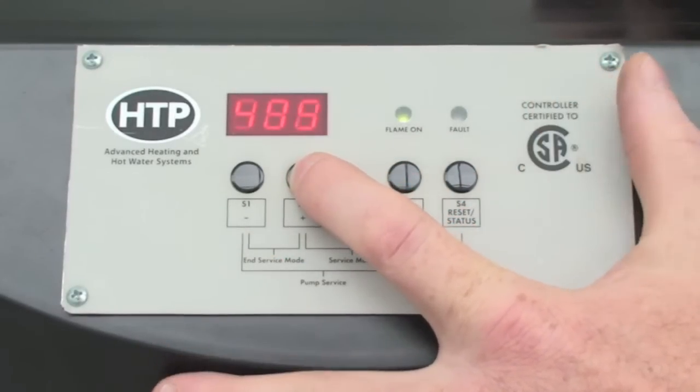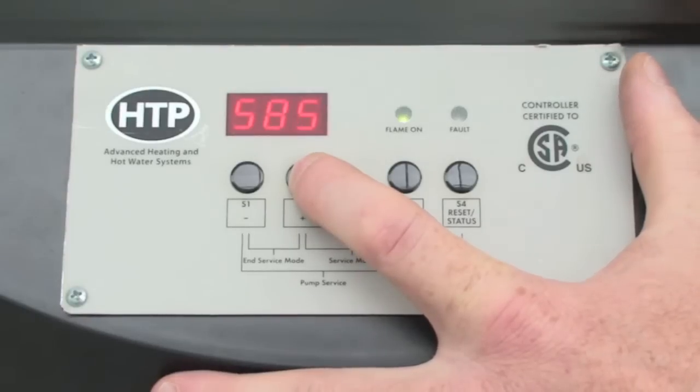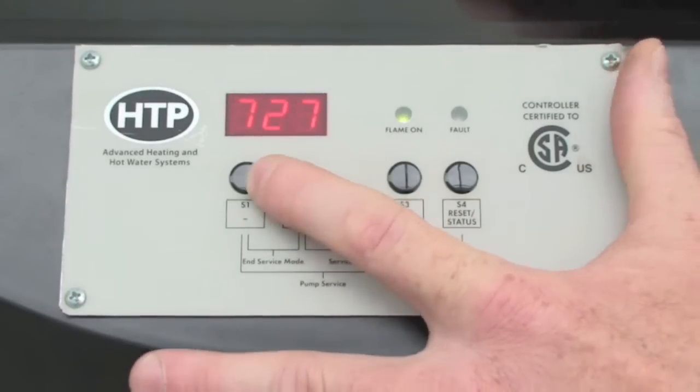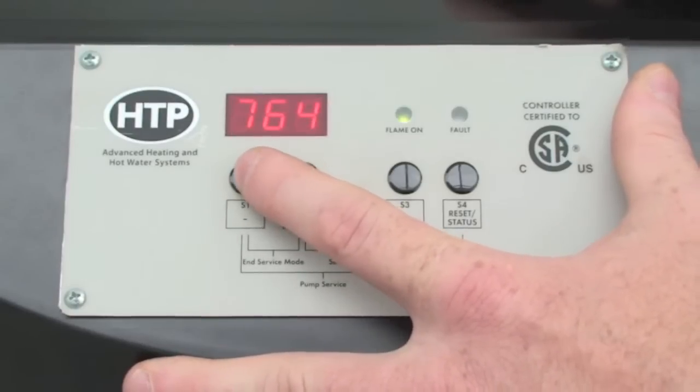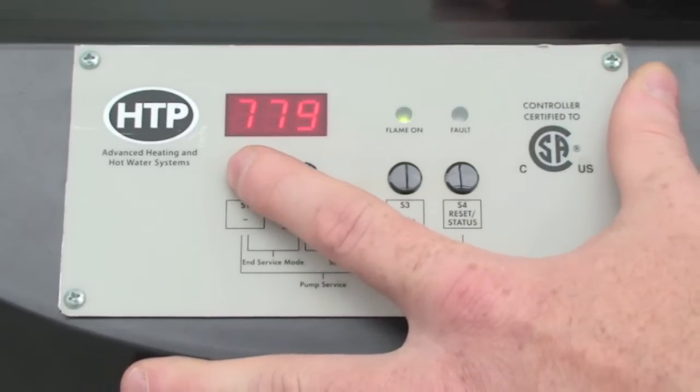As you can see, hitting the S2 plus button will raise the numbers up and increase the fan speed, so we can put this unit at its highest firing rate. This will allow us to take our combustion samples at high fire.